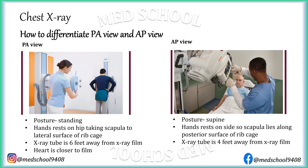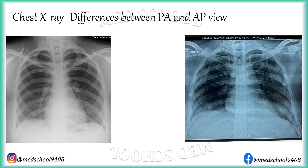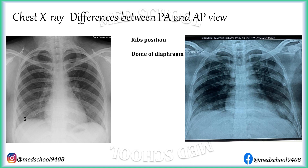In PA view, the heart is closer to the film, while in AP view the vertebrae are closer to the film. Due to the standing posture in PA view, the diaphragm is pulled down by the gravitational force of abdominal contents, so the anterior ends of ribs are lower than the posterior end and ribs are tilted, while in AP view ribs are more or less horizontal. The dome of the diaphragm is lower than the 5th intercostal space in PA view, while it is usually above the 5th intercostal space in AP view. In standing posture, gas in the stomach collects below the fundus, so fundic gas is visible on PA view but may be absent on AP view.